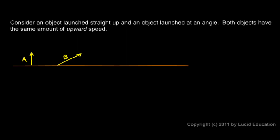I've drawn these in a particular way, so take note of this. Vector B is longer — that means object B is thrown faster. But it's thrown at an angle; it's not thrown in the same direction as object A. I've tried to draw these so that the height of vector A is the same as the height of vector B.